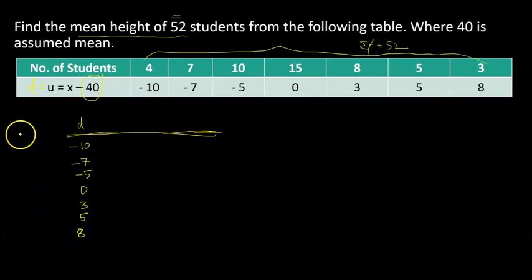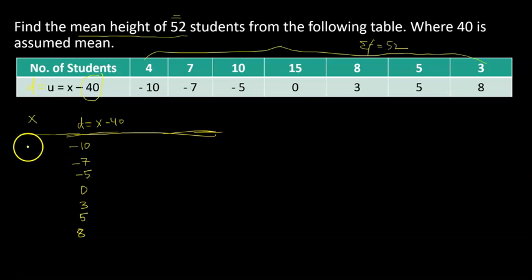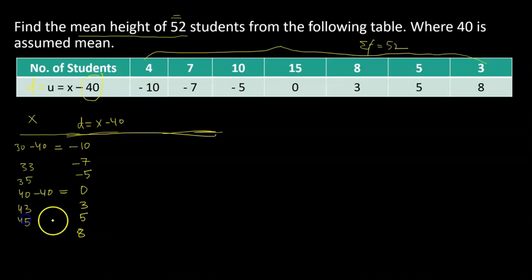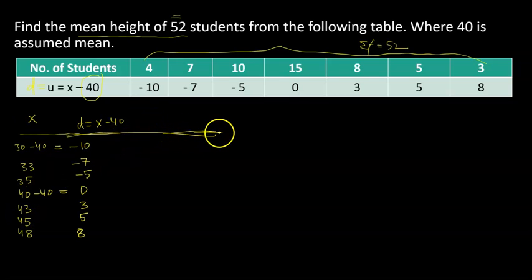Since I know the assumed mean already, it is very easy to calculate x, because U is x minus 40. So the first x value is 30 because 30 minus 40 is negative 10. The second x value is 33, the third is 35, then 40 — since 40 minus 40 equals 0. And then 43, 45, and 48 marks. x is easily traceable if the assumed mean and deviations are given.